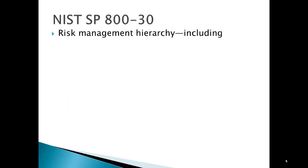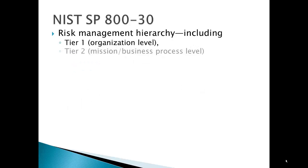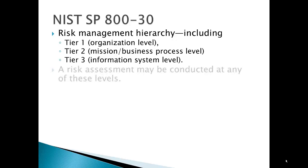The risk management hierarchy includes a Tier 1 or organizational risk assessment, a Tier 2 or mission/business process level threat assessment, and a Tier 3 which is the information system level risk assessment. A risk assessment may be conducted at any of these levels — you can do it at a specific system level, at a particular business process level, or globally organization-wide. NIST SP 800-30 supports any one of these.